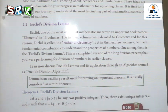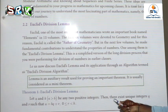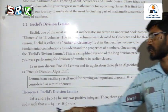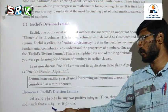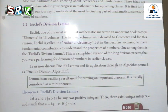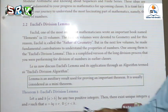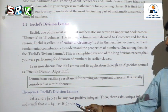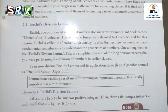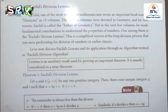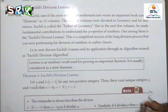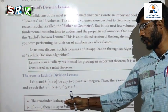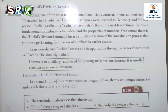Euclid division lemma: Let A and B, where A is greater than B, be any two positive integers. Then there exist unique integers Q and R such that A equals BQ plus R, where 0 is less than or equal to R and R is less than B. The remainder is always less than the divisor.